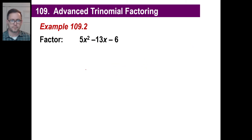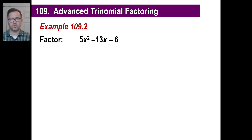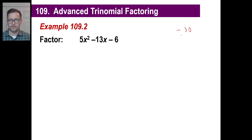Let's try another one — 5x squared minus 13x minus 6. Multiply 5 times negative 6 to get negative 30 again. We need two factors of negative 30 that add to give negative 13. We know one will be positive and one negative. After checking pairs like 6 and 5, 10 and 3 — remember 30 is even so it's divisible by 2 — the answer is positive 2 and negative 15, since 2 minus 15 equals negative 13.